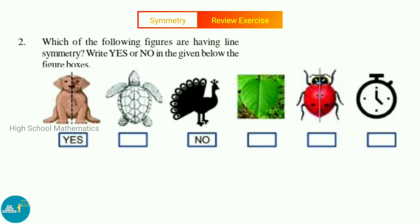See now question number two: Which of the following figures are having line symmetry? Write YES or NO in the given below figure boxes. Observe figure one, it is a dog. Here for this figure we can draw a line of symmetry, so they have written here as YES. Observe figure two, tortoise. Here for this we can draw a line of symmetry, so its answer is YES.